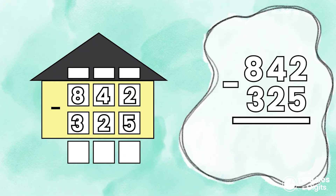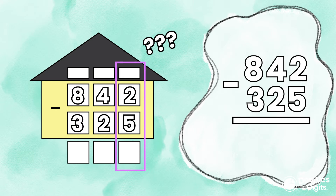Sometimes when you're subtracting numbers, you actually need to borrow from the place value before it. Why is that, and how do we do that? Let's look at a problem and I'll show you what's going on. We're going to put the two numbers in our place value chart and start in the ones place. 2 minus 5 — wait a minute, I don't have 5 to take away from 2, so what am I going to do?